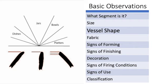This allows us to distinguish three very basic vessel shapes: outward leaning or everted vessels, inverted vessels, and vertical vessels.